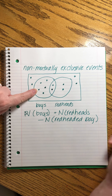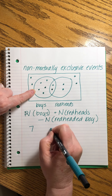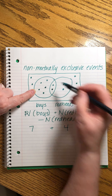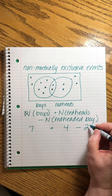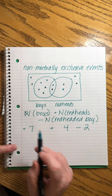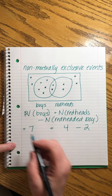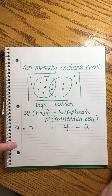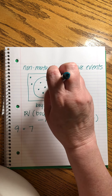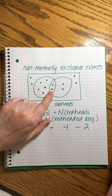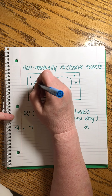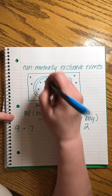The number of boys is seven, plus the number of redheads is four, but then we have to subtract out the number of redheaded boys, which is two. That tells us that the probability of being a boy or a redhead is nine out of this group. One, two, three, four, five, six, seven, eight, nine — we did not double count the boys that are also redheaded; we had to subtract them out.